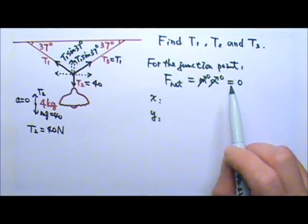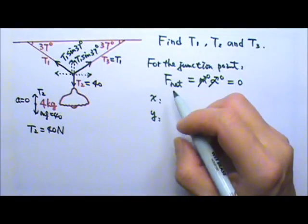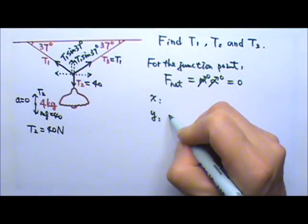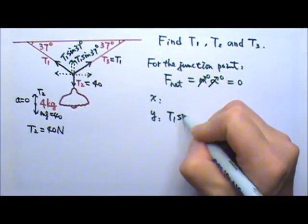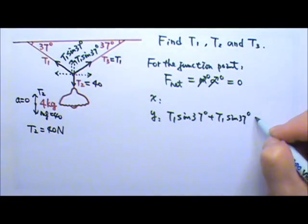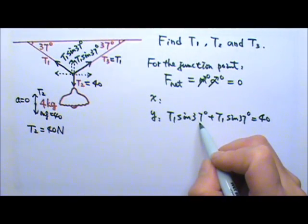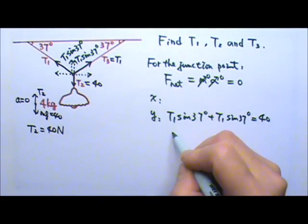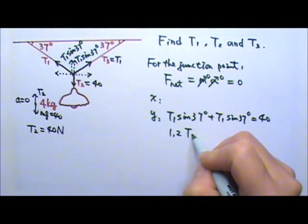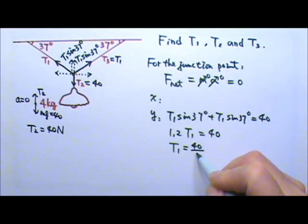The net force being zero in the y-direction means the upward forces added together have to equal the downward force. So T1 sine 37 degrees plus T1 sine 37 degrees equals 40. Sine 37 degrees is 0.6, so it's 0.6 T1 plus 0.6 T1. So 1.2 times T1 equals 40, and this gives us T1 equals 40 divided by 1.2.